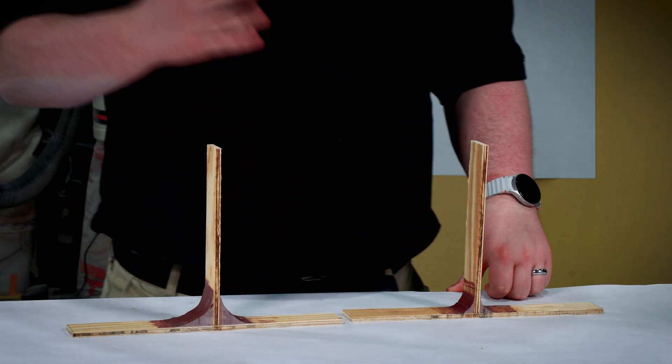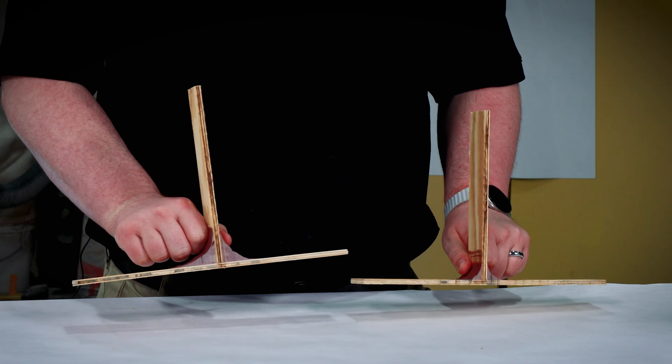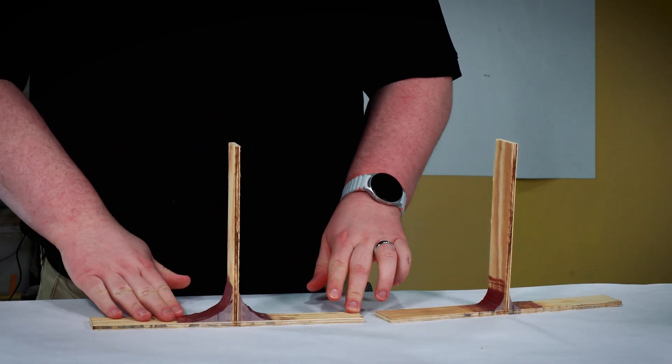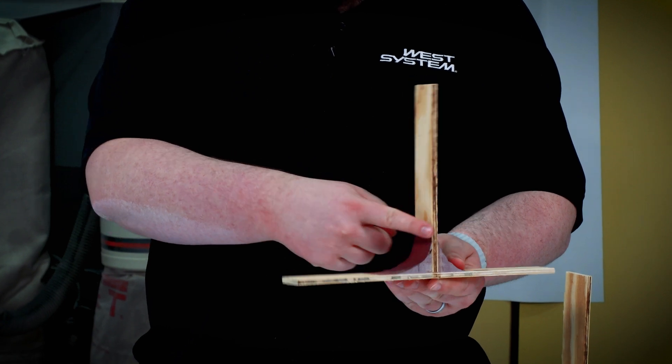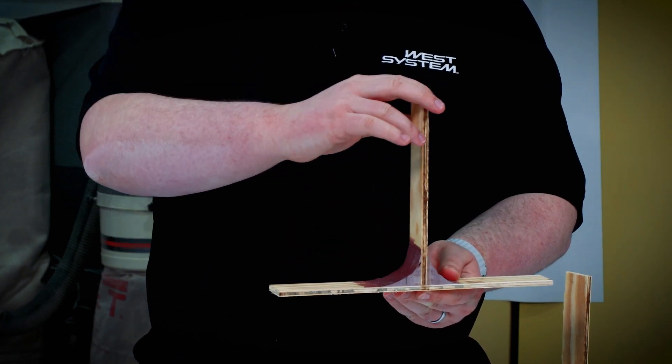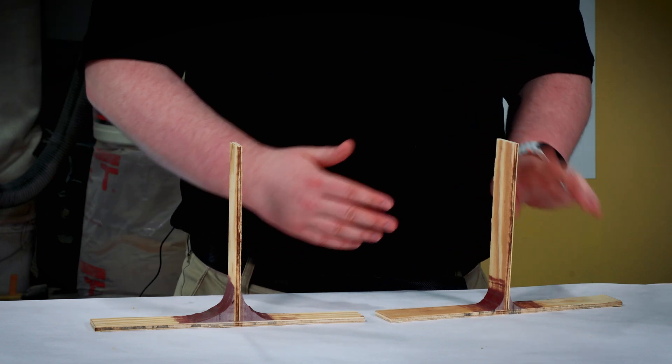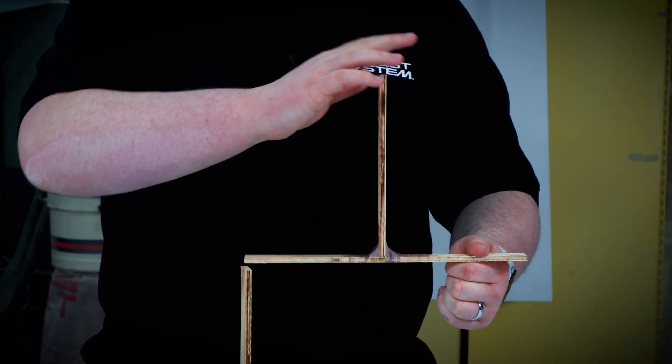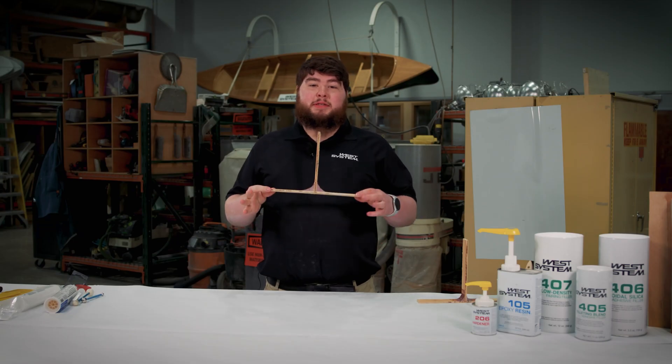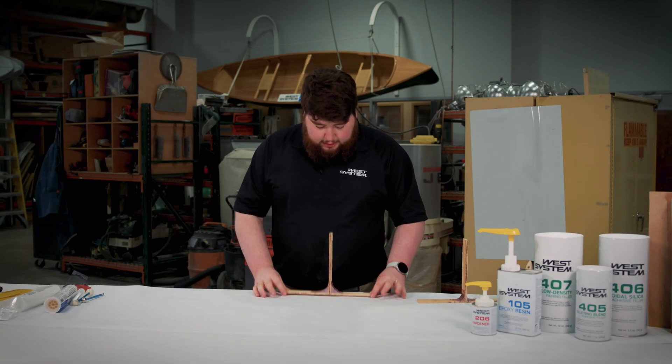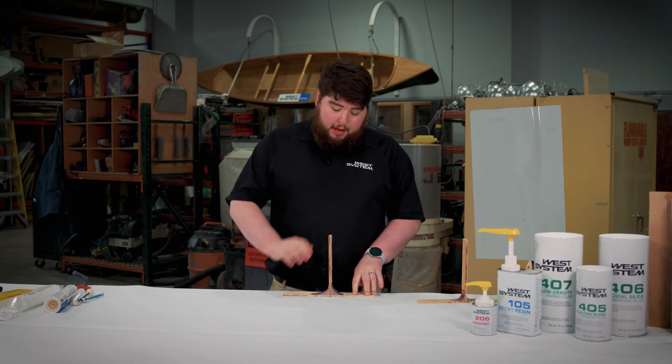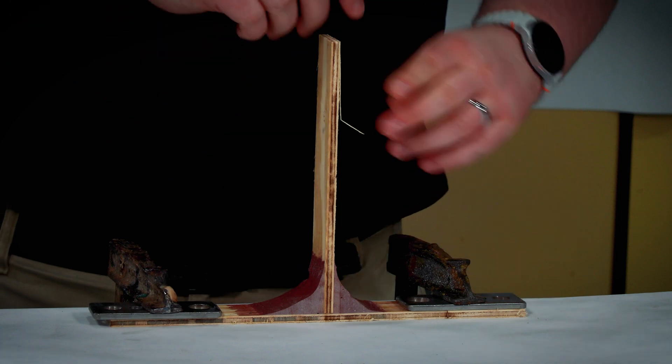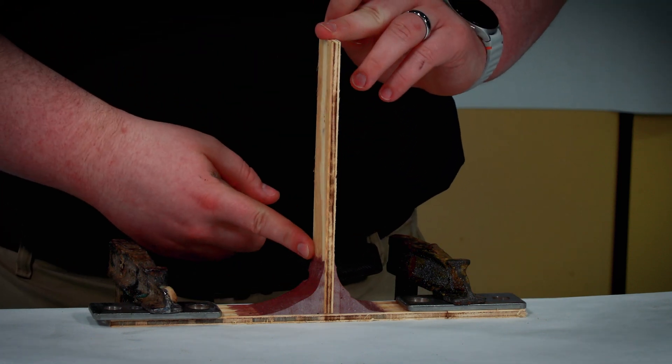To demonstrate the impact that the size of a fillet has on the failure method, we have two different sized fillets made with our 407 low density filler. In an appropriately sized fillet, we would expect to see the wood crack right above the fillet that we made. In an undersized fillet, we would expect to see an adhesive failure from the bottom substrate as the fillet is pulled away from the wood. To demonstrate this, we're going to take our appropriately sized fillet and clamp it down to the table. So I've clamped down this appropriately sized fillet onto the table and we expect to see a failure right above the fillet.